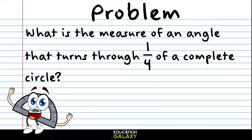Let's check out this problem. What is the measure of an angle that turns through one fourth of a complete circle? So we're looking for one fourth of a circle. We need to figure out how many degrees out of 360 that would be. So let's see if we can solve our equivalent fractions.